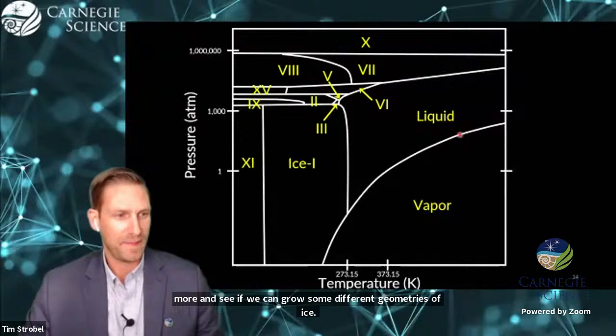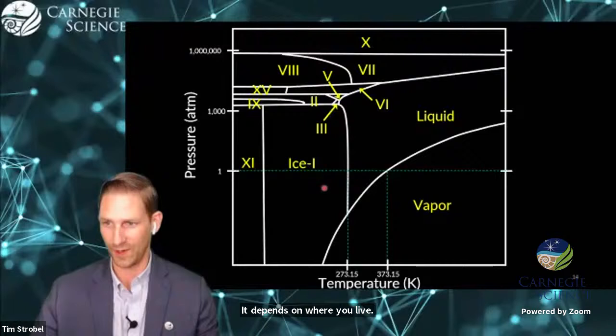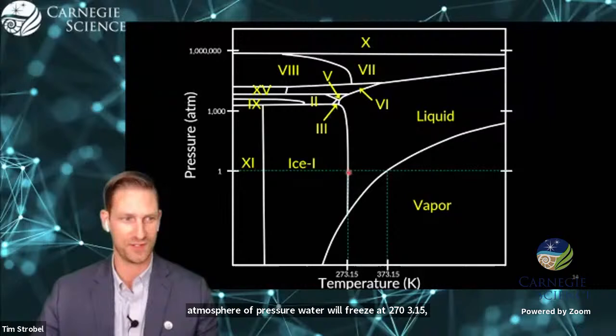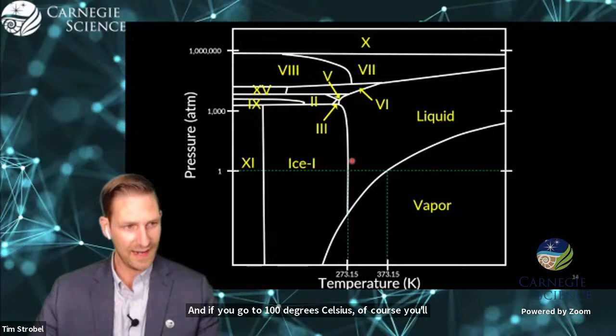So if you didn't pick up on the answer to the quiz, it depends on where you live. This is now a realistic phase diagram of water. We have our vapor phase and our liquid. At one atmosphere of pressure, water will freeze at 273.15, which is the same as 32 Fahrenheit, which is the same as zero degrees Celsius. So that was the trick part of the answer in the question.